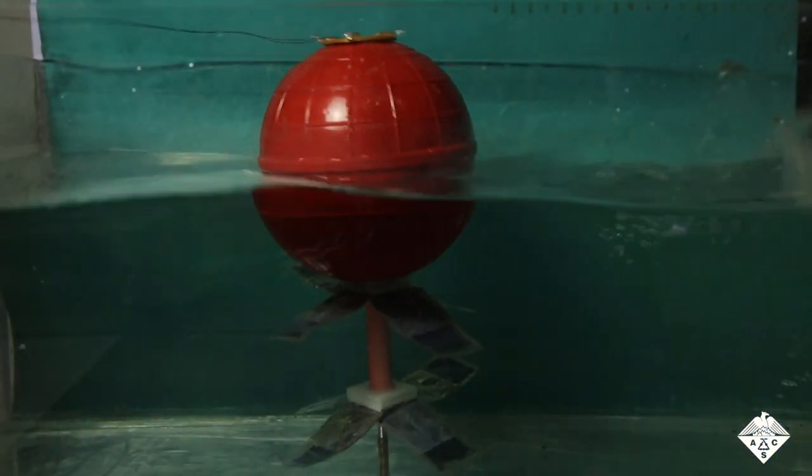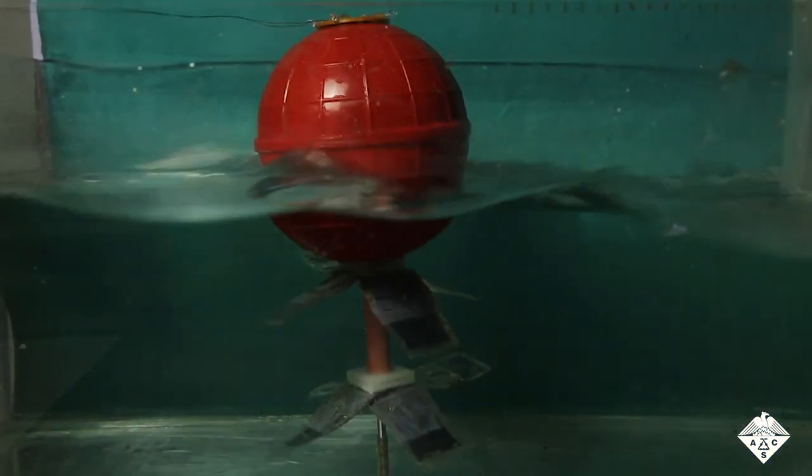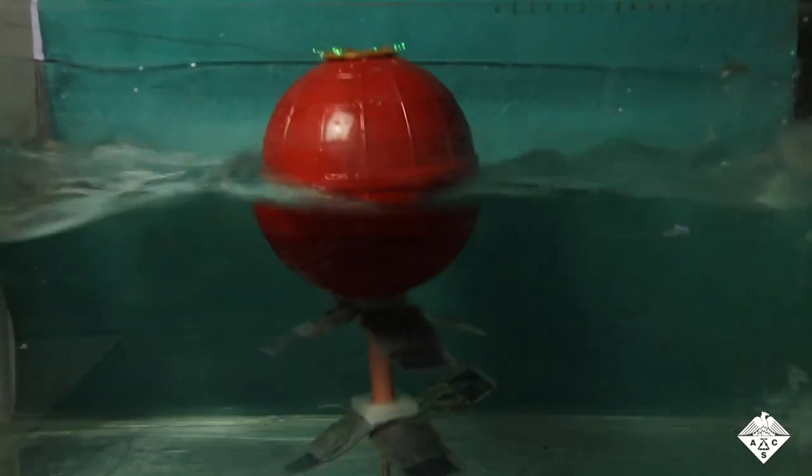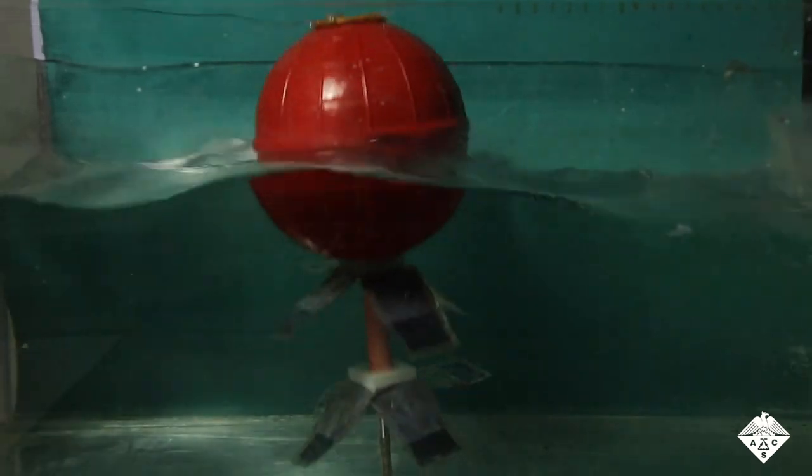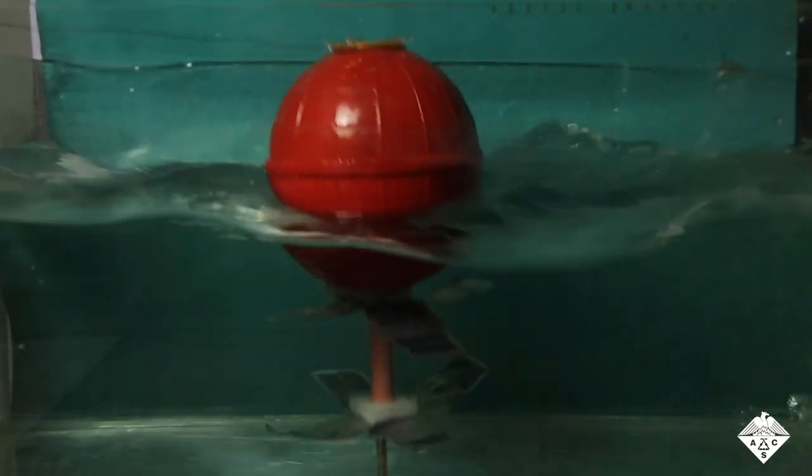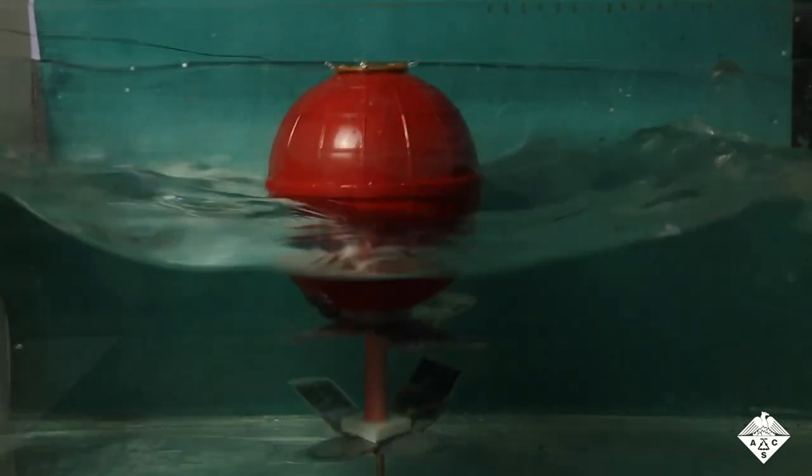Now researchers reporting in ACS Nano have developed flexible power generators that mimic the way seaweed sways. These generators can efficiently convert surface and underwater waves into electricity to power marine-based devices, such as the blinking LED lights at the top of this buoy.